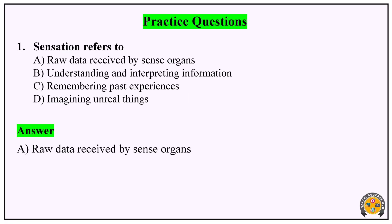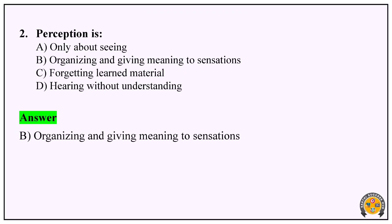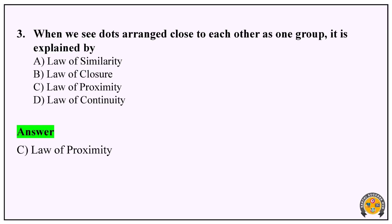Now let's try some practice questions. First: what is sensation? Option A — raw data received by sense organs — is correct. Second: what is perception? Option B — organizing and giving meaning to sensation — is correct. Third: when we see dots arranged close to each other as one group, it is explained by the Law of Proximity. Option C is correct.